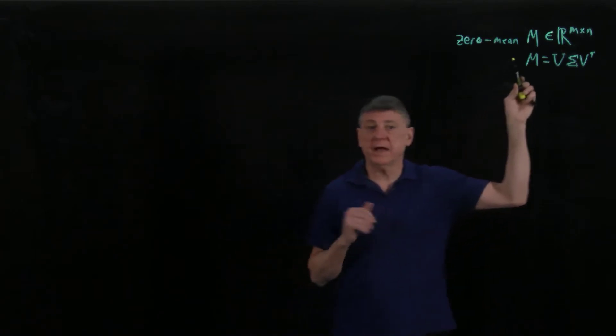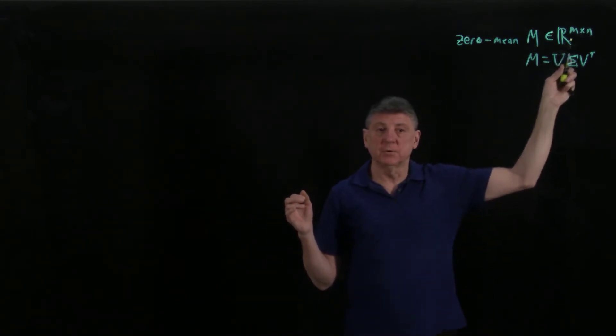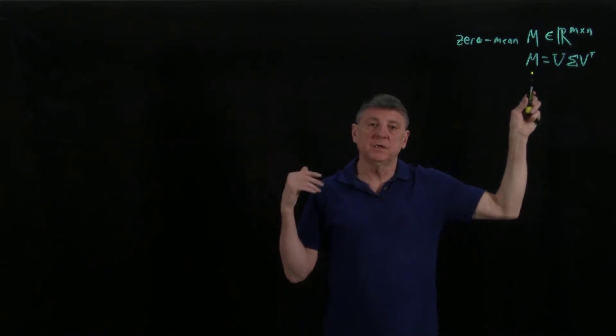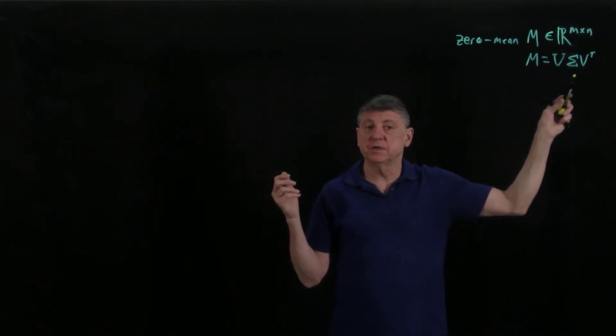Let's recall that what we have are zero mean data in a matrix M. These are all real numbers. There are M observations, so there are M rows, and then there are N variables or columns. And we can perform the singular value decomposition of this matrix as U sigma V transpose.